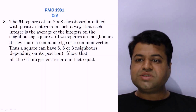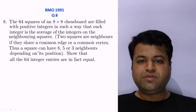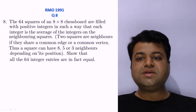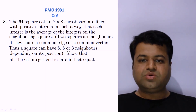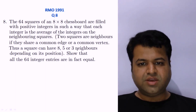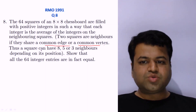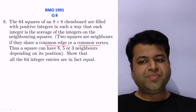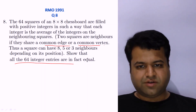Question number eight: The 64 squares of an 8×8 chessboard are filled with positive integers in such a way that each integer is the average of the integers on its neighboring squares. Two squares are neighbors if they share a common edge or a common vertex. Show that all 64 integers are in fact equal.